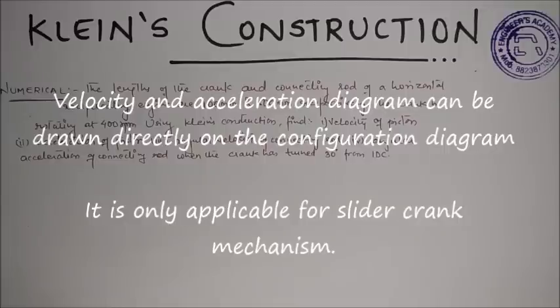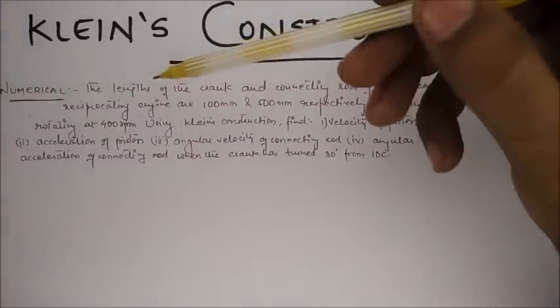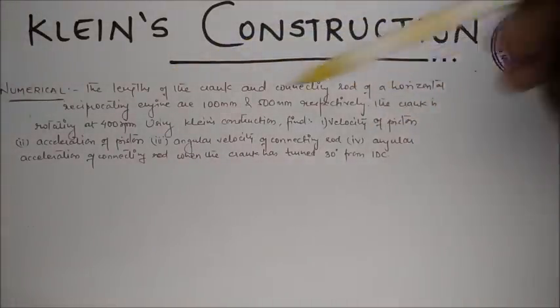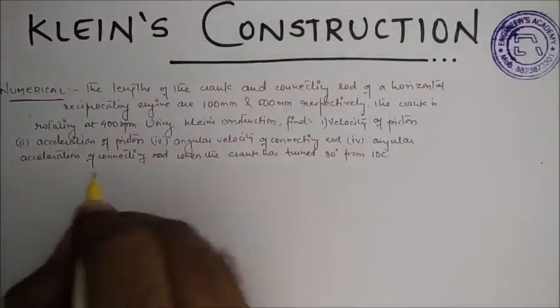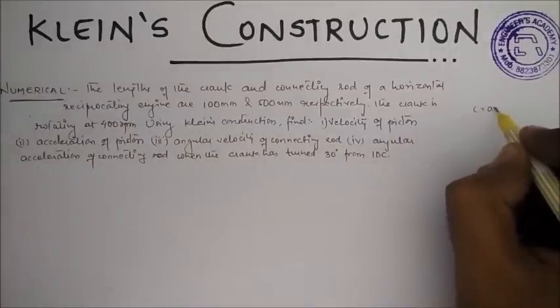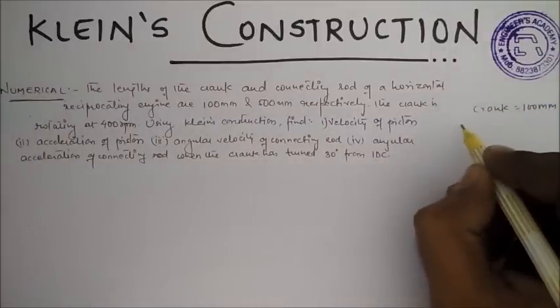applicable for the slider crank mechanism. Let us understand this thing with the help of a numerical. Now the given numerical is: the length of crank and connecting rod of a horizontal reciprocating engine are 100 and 500 mm. So crank length is given as 100 mm and connecting